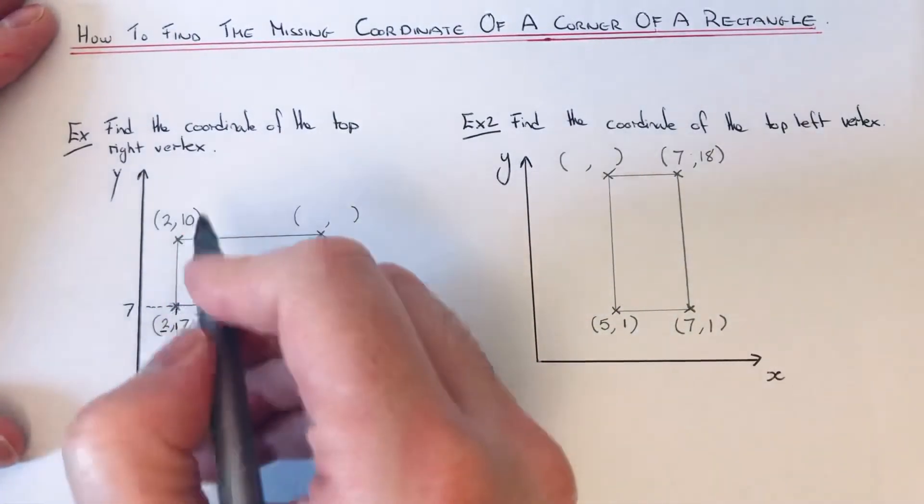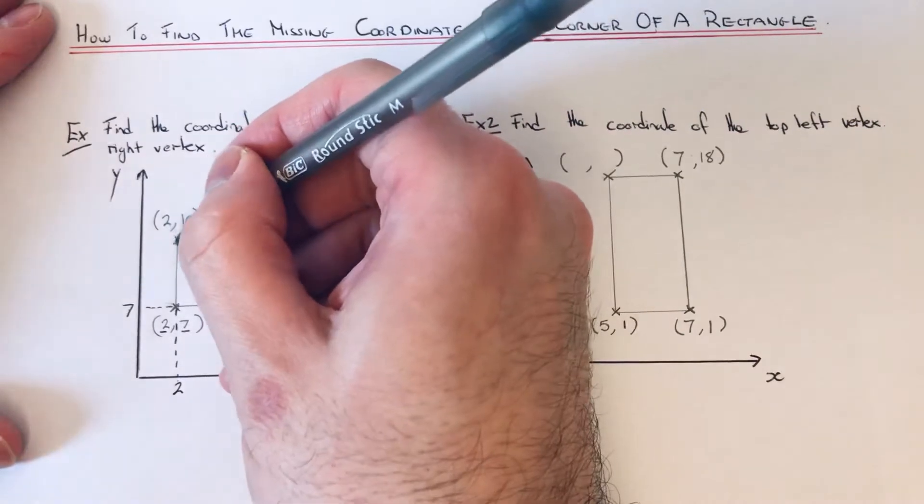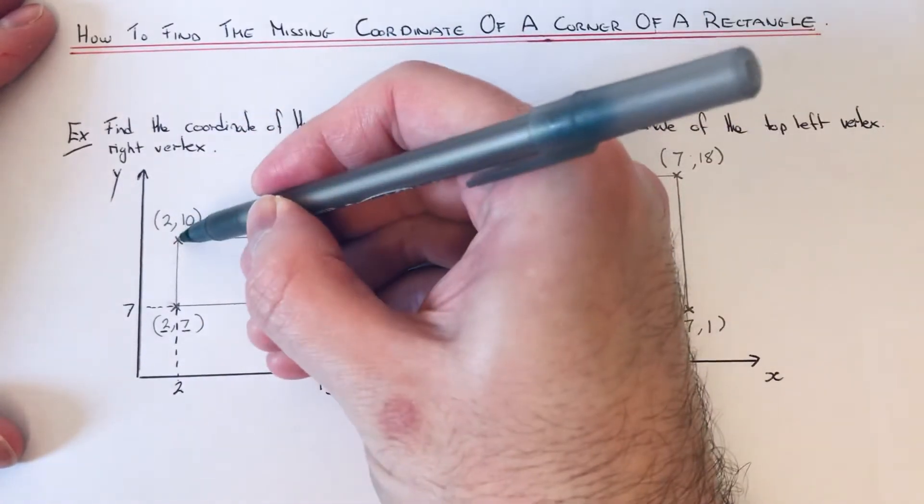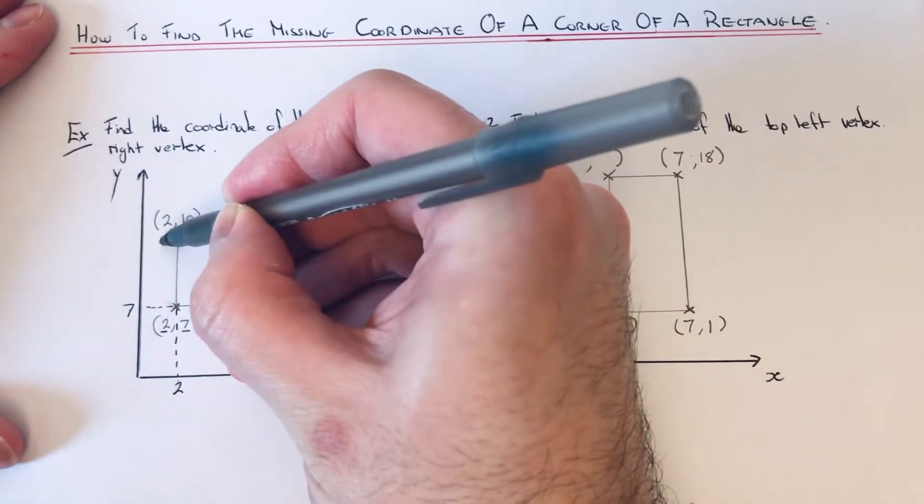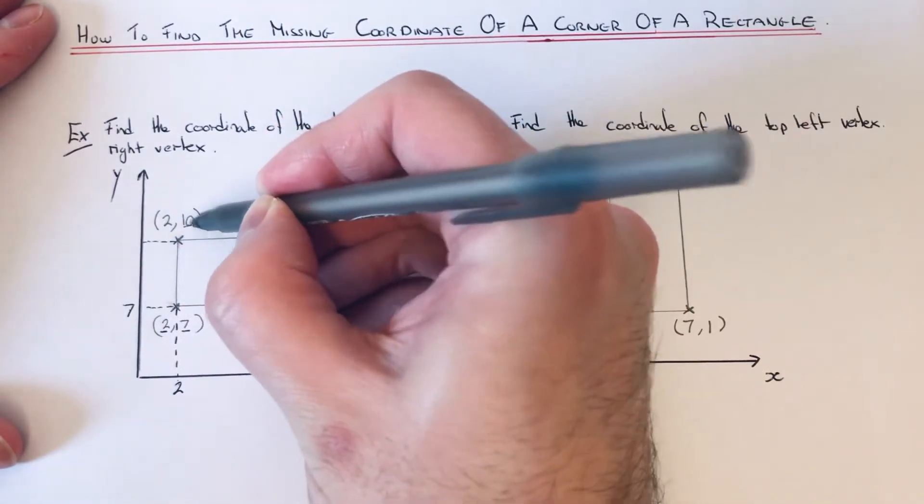Let's do the top left corner. If we do a line going down, it's two - we've already got that one. And if we do a line going to the y-axis, that number there is ten.